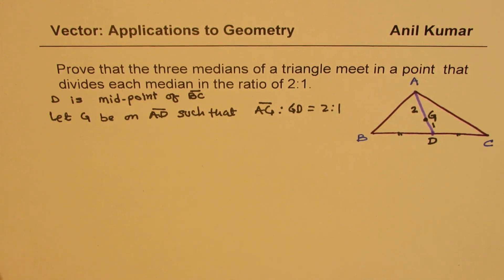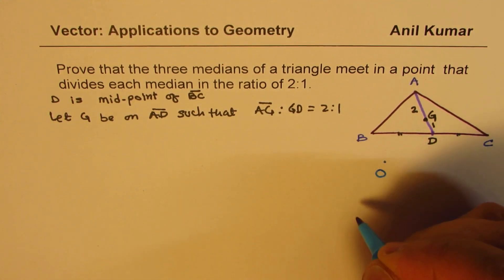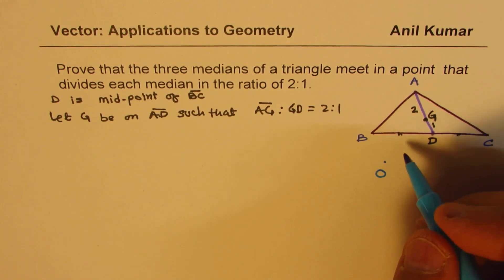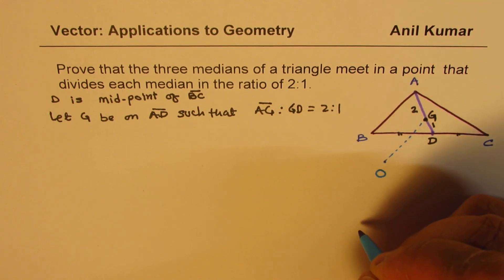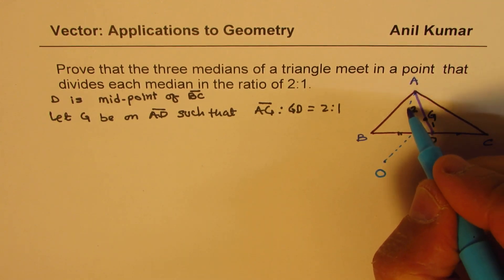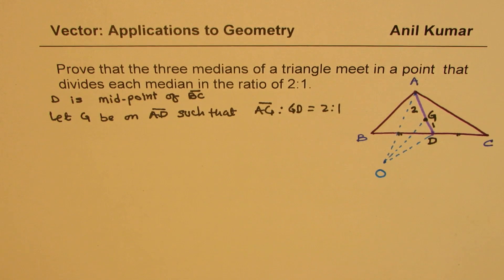That is the strategy. Now we'll consider a point O which is outside this triangle. Let's consider a point O, an external point, you can say origin. From O we want to find what OG is, the position vector.